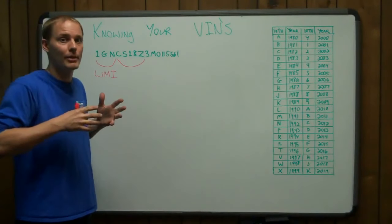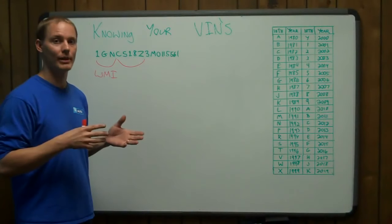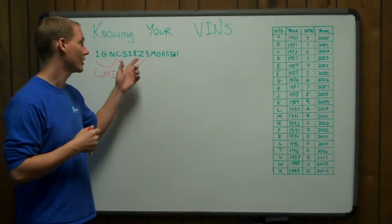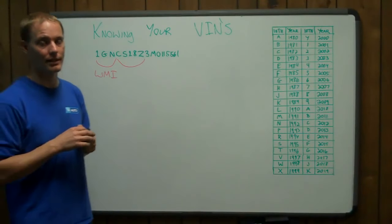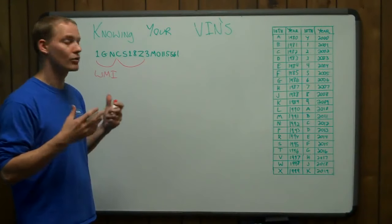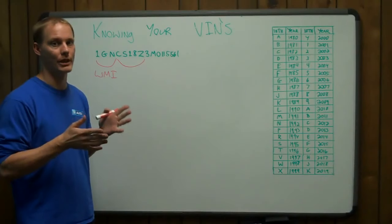So if you go to a junkyard, for example, and you want to know what engine is under the hood of this car, rather than opening the hood, you can go to this thing. And if you know you're looking for a Z engine, then you see Z in the eighth digit, and boom, you got what you want.